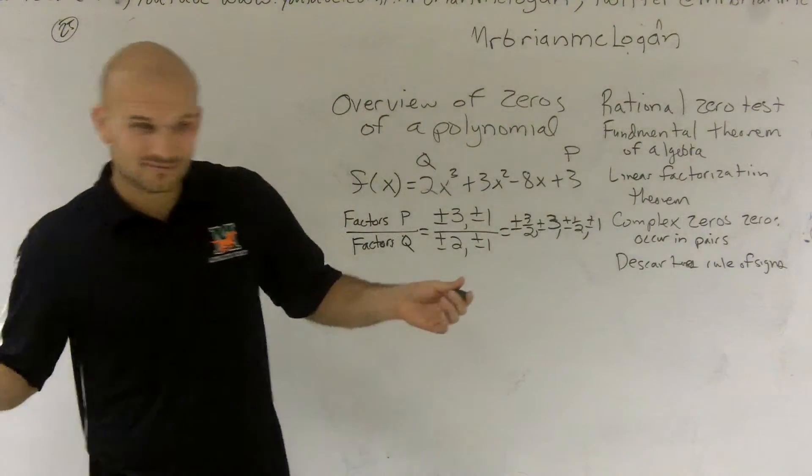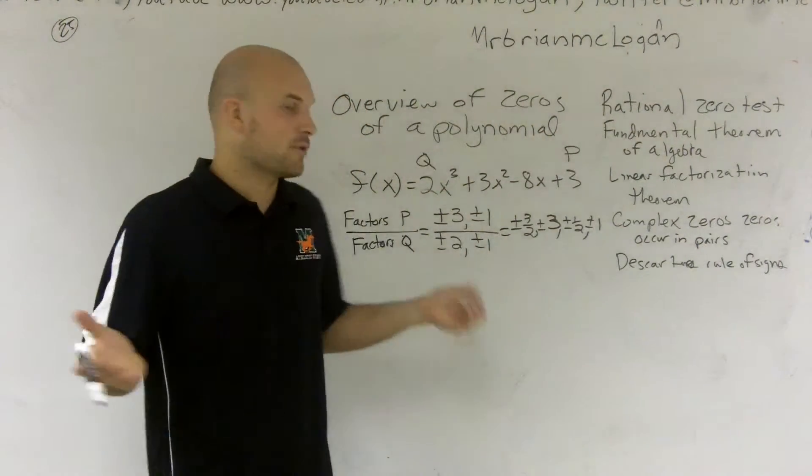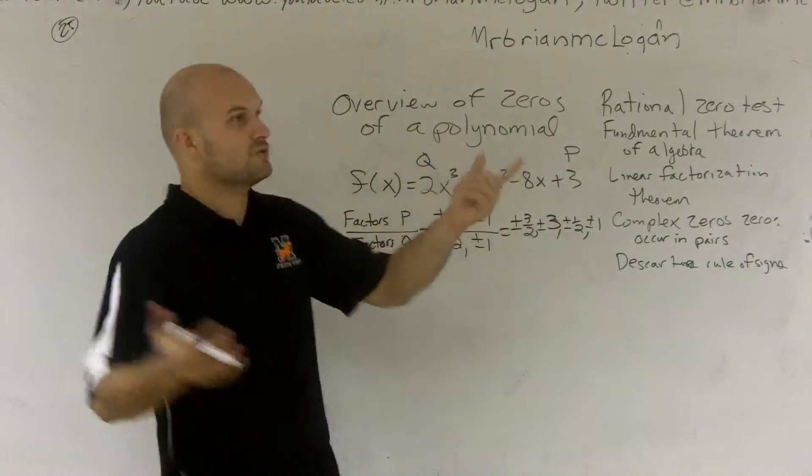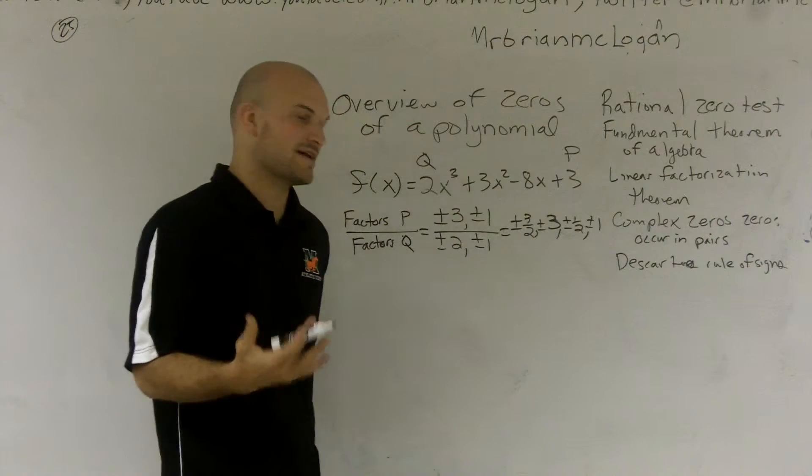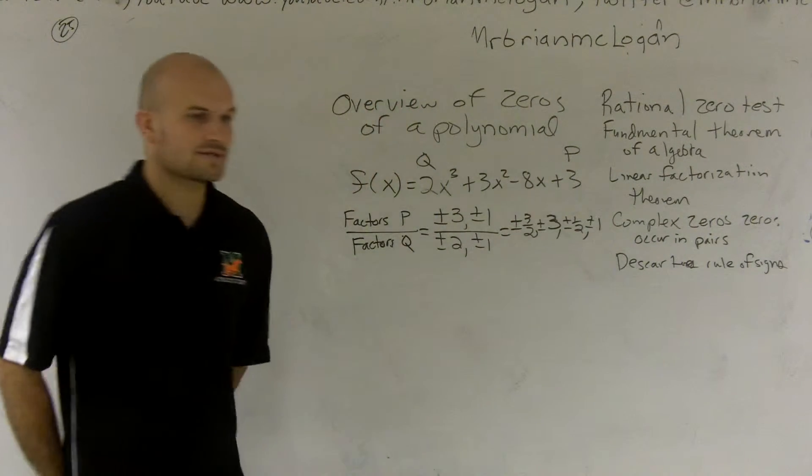Now, do we know that any of them are going to be there? No. We could have all irrational roots, or we could have two complex roots. We don't really know. But if I'm going to ask you if we have a rational root, we know that these are your only possible rational roots.